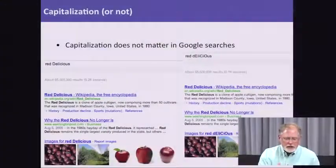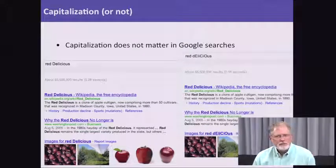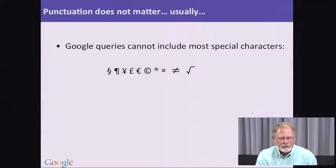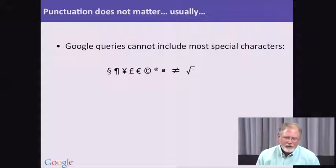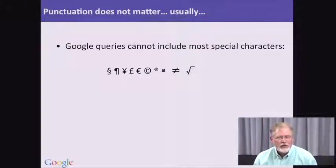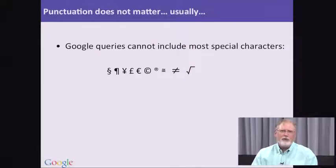For example, capitalization: if I spell it 'Red Delicious' with a capital D, or if I make every other letter a capital, it doesn't matter — the results will be exactly the same. What Google does is take each of your search terms and ignore the case. So case really doesn't matter. Another thing that doesn't matter are a lot of the special characters you might want to put into a query — the section symbol, paragraph symbol, yen symbol, pound symbol, euro symbol — all those special characters get basically dropped. So when you search for the copyright symbol followed by 2010, you're actually searching for just 2010. It's important to know that so you're not fooled by results that work for reasons you didn't anticipate.